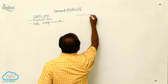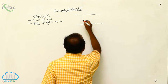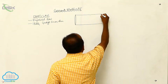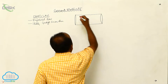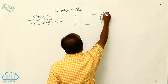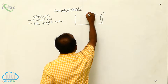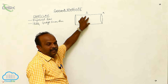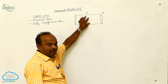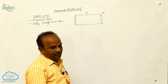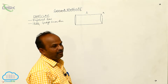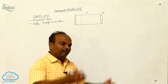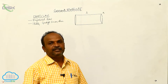Let us consider this conductor of cross-sectional area A and length L. Initially, the electrons inside the conductor are in random motion. To move them in a regular motion and get current to flow, you need to maintain a potential difference across the conductor. To maintain this potential difference, a cell has to be connected.